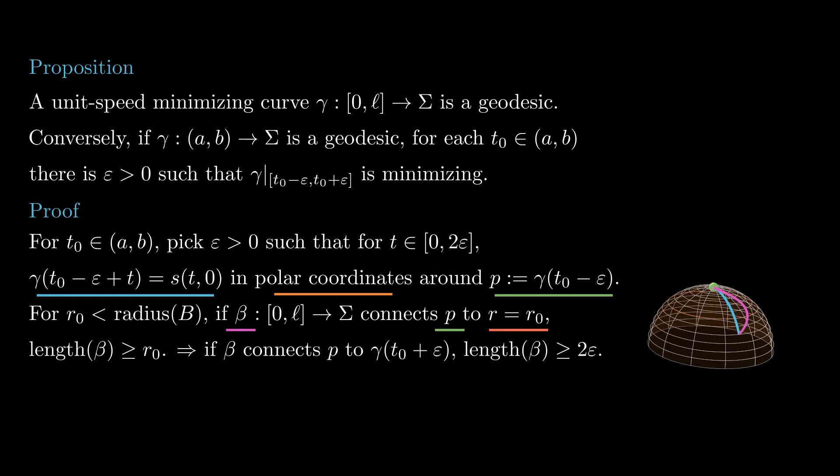showing that gamma, restricted to this short interval of length to epsilon, is a minimizing curve. This finishes the proof of the fact that motivated the introduction of geodesics in the first place. Minimizing curves are geodesics and short geodesics are minimizing curves.